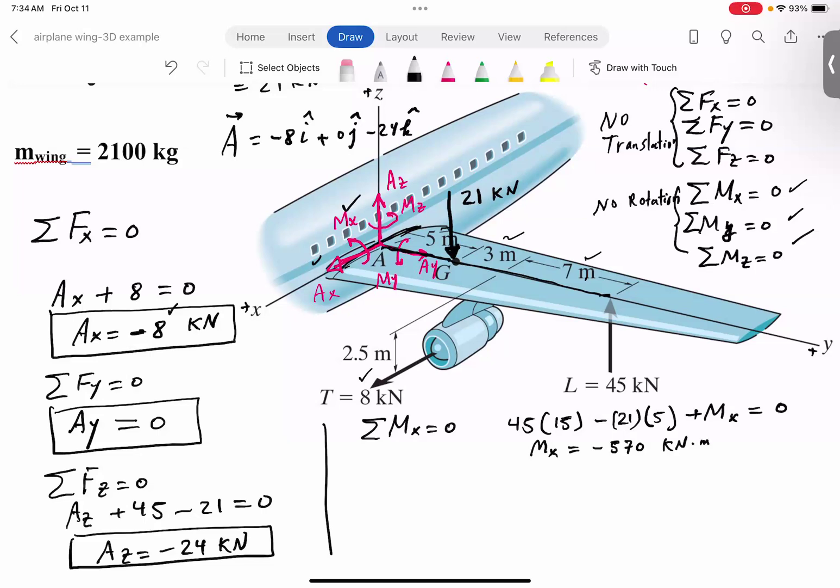And then in the Y direction, similarly, what forces have moment about Y axis? So look, the 21 and 45, they're passing through the Y axis, so they can't have moment. That leaves only the 8 kilonewton thrust.